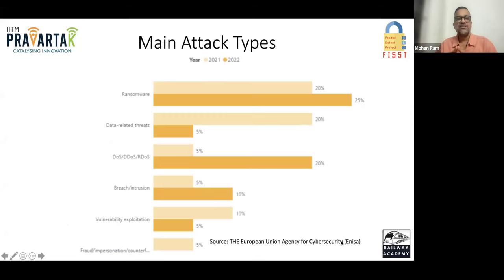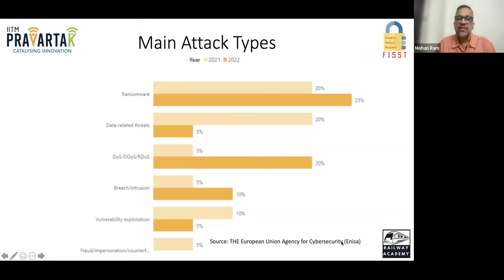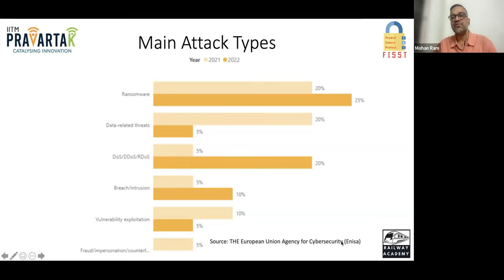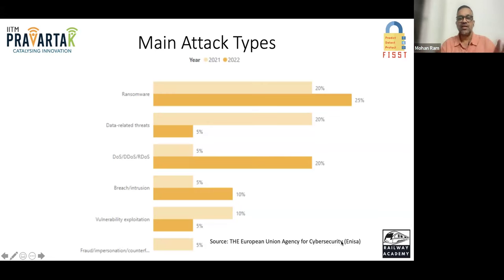Comparing 2021 and 2022 data: ransomware, data-related threats, DDoS, breach and intrusion, and vulnerability exploitation are all tracked. In most cases, ransomware and DDoS have gone up significantly, and breach and intrusion has also increased. However, data-related threats have come down because organizations have started using better techniques — good encryption, key management — to safeguard their data. Vulnerability exploitation has also come down because organizations have consciously educated their workforce about security.